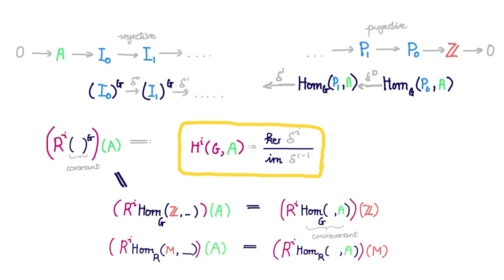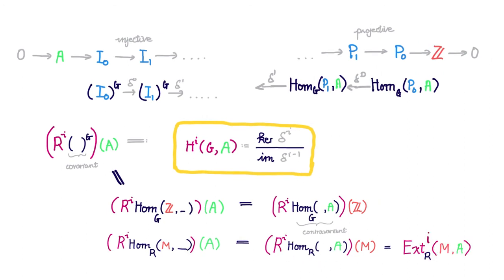Evaluating this right-derived functor at A should give us the same thing as evaluating this right-derived functor at M. We call this common value Ext^i_R of M comma A. Ext here is short for extension, and we will see the reason for this name in future videos.